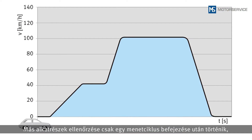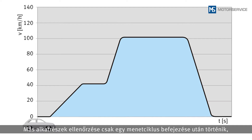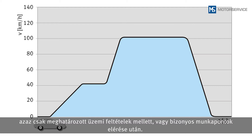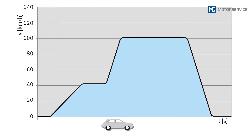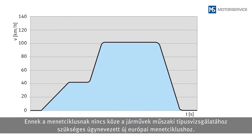Other components are only monitored when passing through a driving cycle — in other words, under specific operating conditions or if certain operating points have been reached. Examples of this cyclical monitoring include the catalytic converter, the fuel tank ventilation system, or exhaust gas recirculation.